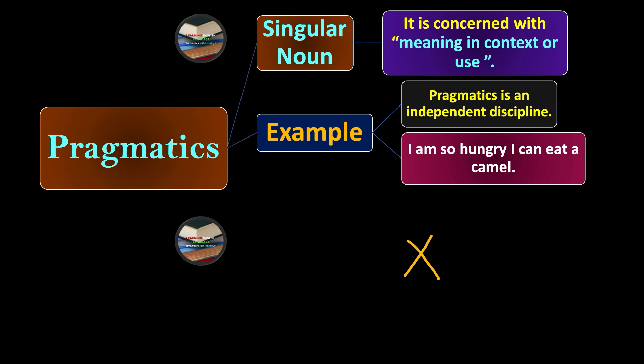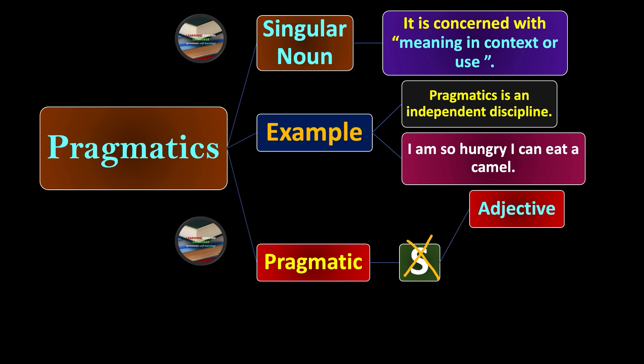But of course he cannot eat a camel; it exaggerates the intensity of hunger. Pragmatic—without 's'—is an adjective with an altogether different meaning. It means practical, realistic. So pragmatics is concerned with meaning in context.